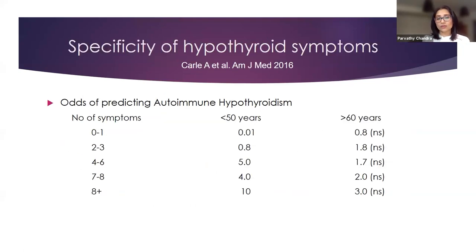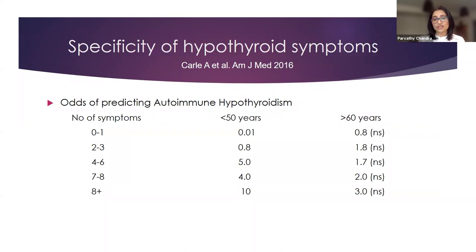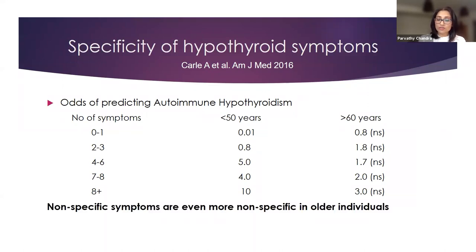Carl et al. looked at the specificity of hypothyroid symptoms in the elderly population — more than 60 years of age — and assessed the odds of predicting hypothyroidism based on a symptomatic score. They found there is absolutely no statistically significant odds of predicting hypothyroidism based on symptoms. Even with eight or more symptoms, they were nonspecific and non-statistically significant. Their conclusion was that nonspecific symptoms are even more nonspecific in older individuals.